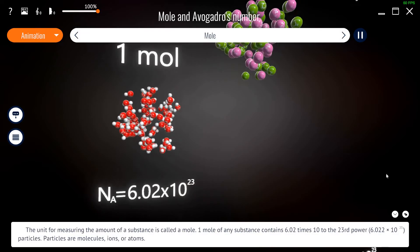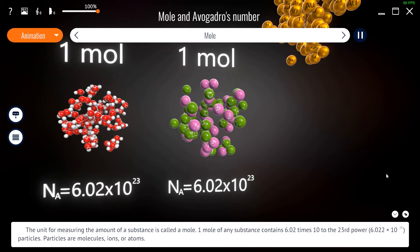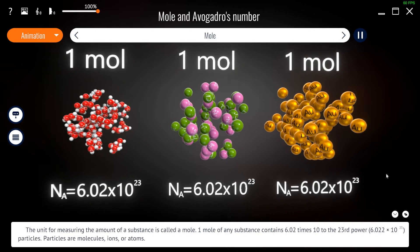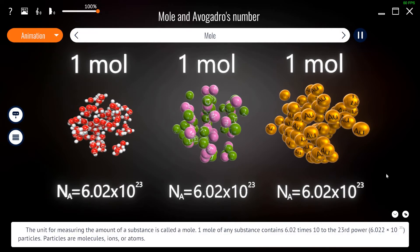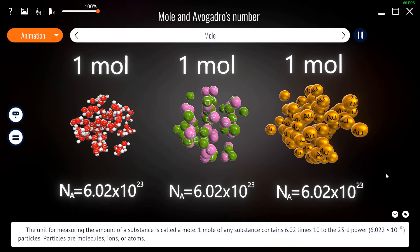The unit for measuring the amount of a substance is called a mole. One mole of any substance contains 6.02 times 10 to the 23rd power particles. Particles are molecules, ions, or atoms.